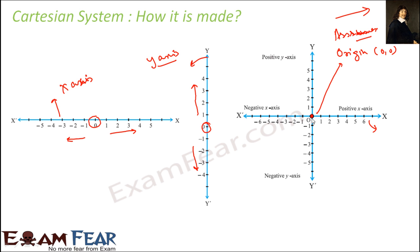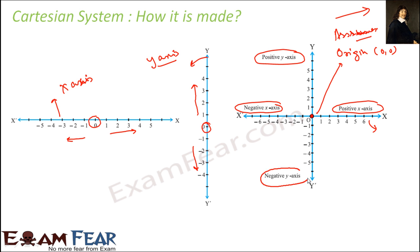He further divided the axes: the part going left to right has all positive numbers, called the positive x-axis; the other side has negative numbers, called the negative x-axis. Similarly, the upward part has all positive numbers, called the positive y-axis, and the downward part has all negative numbers, called the negative y-axis. The point where the two axes meet is called the origin, denoted by (0, 0).